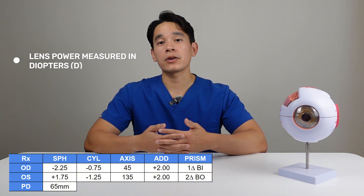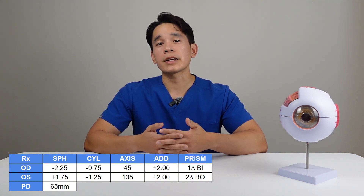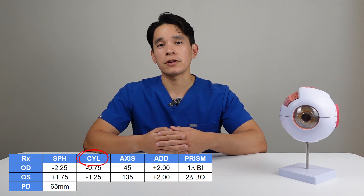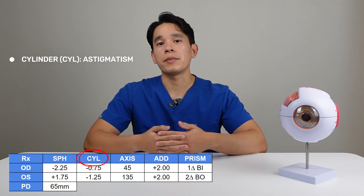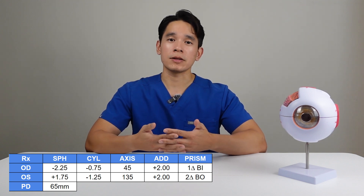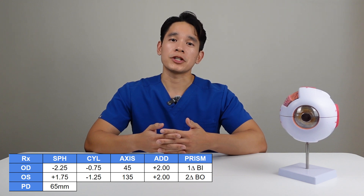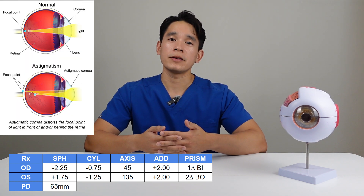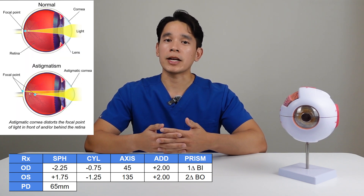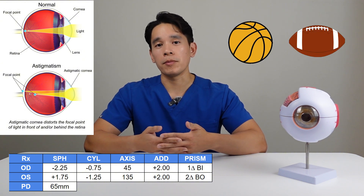Your lens power is measured in a unit called diopters. The second column you'll see is the cylinder, also abbreviated as CYL. This is the amount of power needed to correct for your astigmatism. Astigmatism is when the surface of your eye is not completely spherical like a basketball, but instead shaped more like a football.